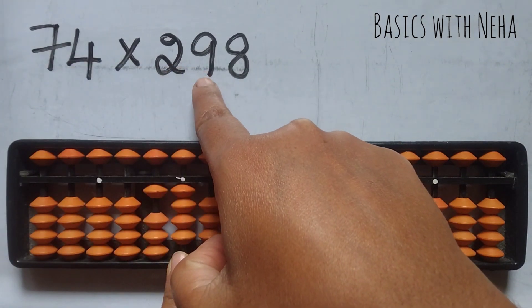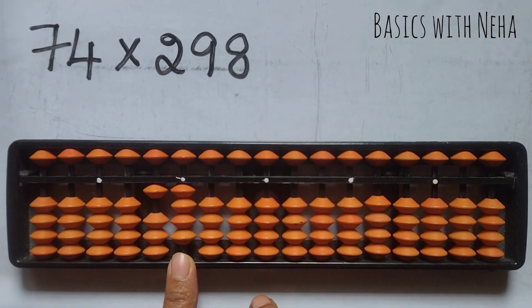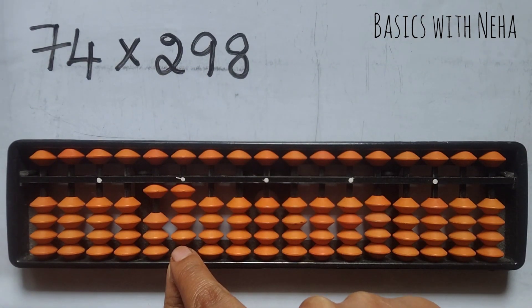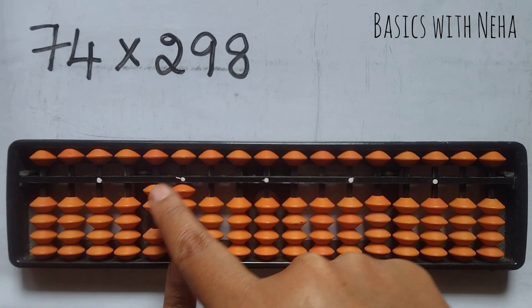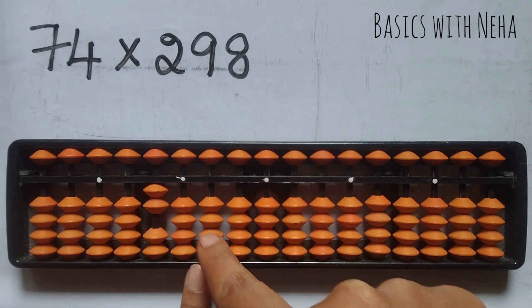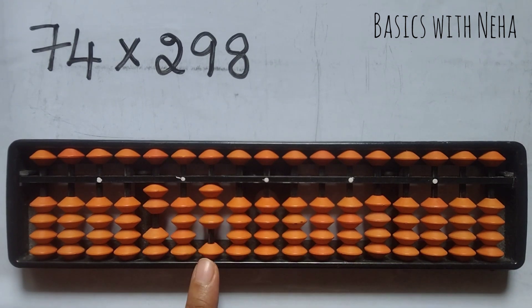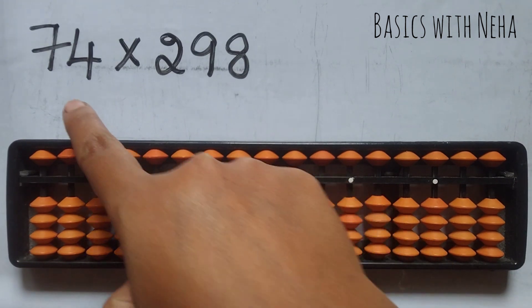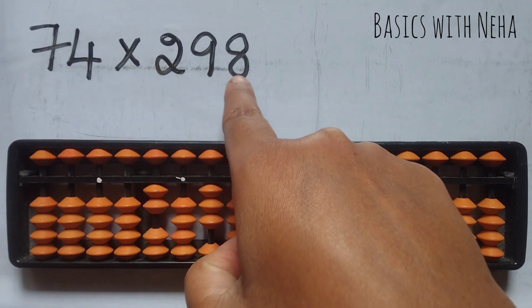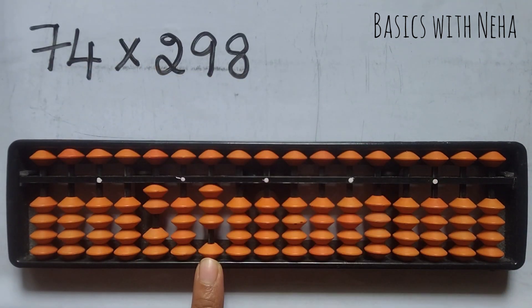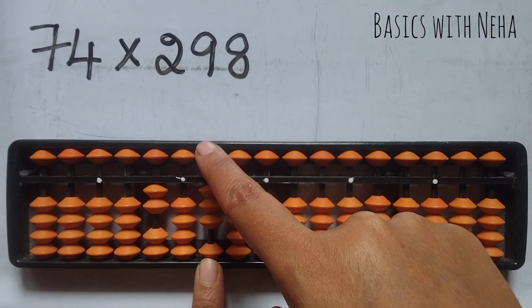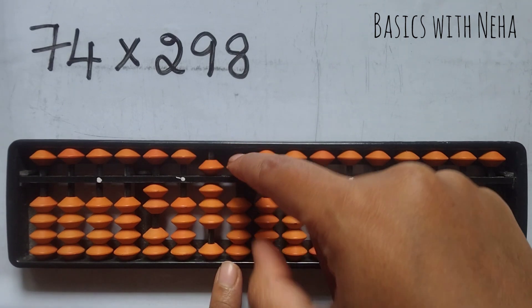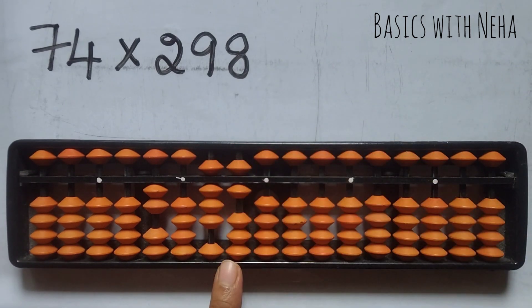7 nines are 63. So you have to place 6 here. To place 6, it is plus 10 minus 4, and 63. Then 7 eights are 56, so you'll place 5 here and 6 here.